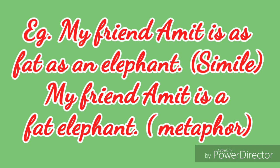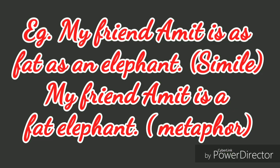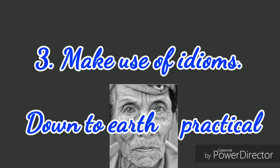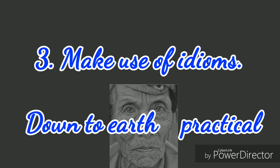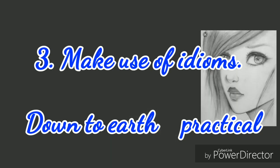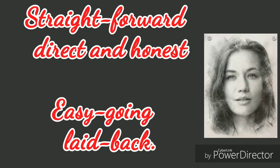For example, if you say 'my friend Amit is as fat as an elephant,' that is a simile, but if you say 'my friend Amit is a fat elephant,' that is a metaphor. Also make use of idioms. An idiom is a specific way of saying something — the words don't mean literally what they say but convey a different meaning. For example, 'down to earth' means practical, 'straightforward' means direct and honest, and 'easy going' means laid back.